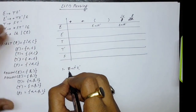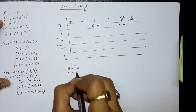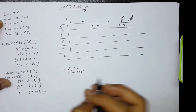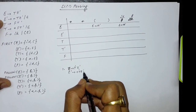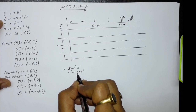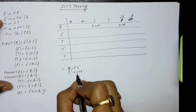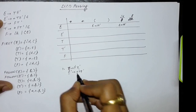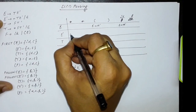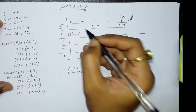The next production that does not contain epsilon is E' → +TE'. The first of the right-hand side, first of +TE', is plus. So E' → +TE' will be written in the E' row and plus column.